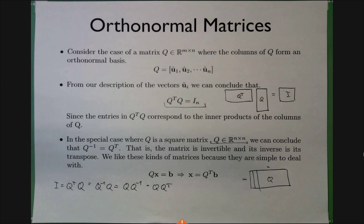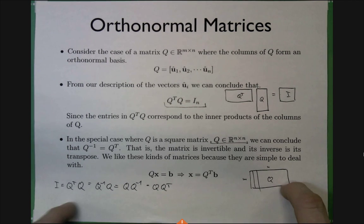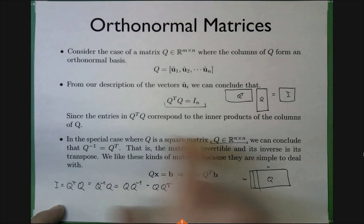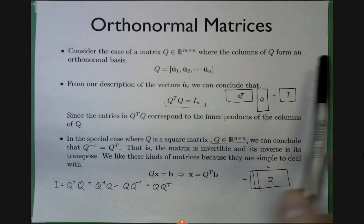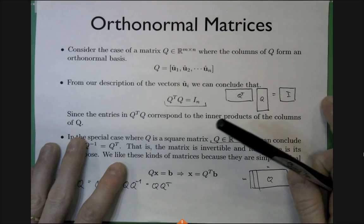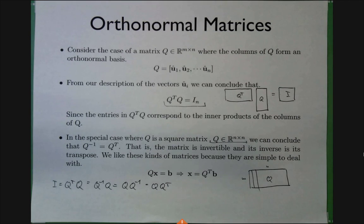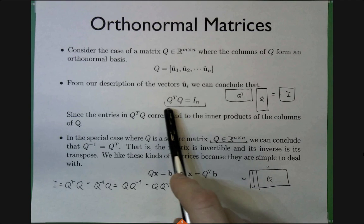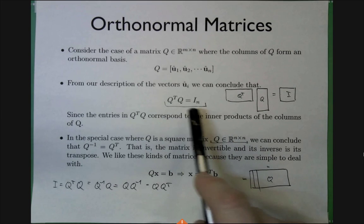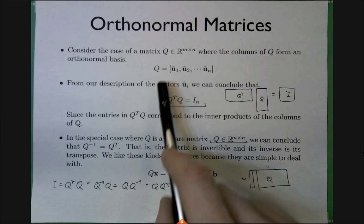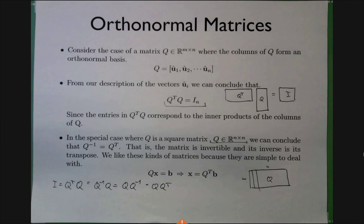So this is what I discussed last time. An orthonormal matrix can be rectangular, and it's called orthonormal if the columns form an orthonormal set of vectors — an orthonormal basis. Orthonormal implies linearly independent, and it spans some subspace, so it must be a basis. You can write it neatly as Q^T Q equals identity, which is equivalent to requiring the column vectors are orthonormal.